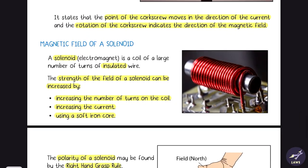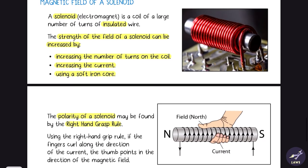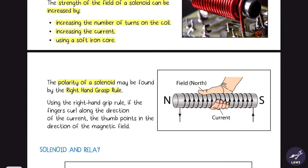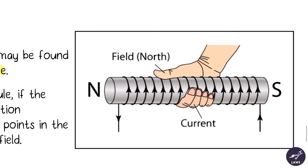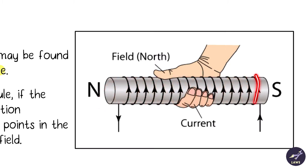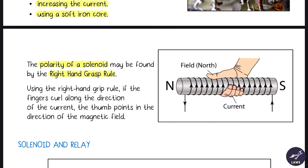The polarity of a solenoid may be found by using the right hand grasp rule. You wrap the right hand around the solenoid in the direction of the current, and the thumb points toward the north pole.